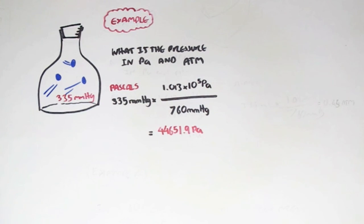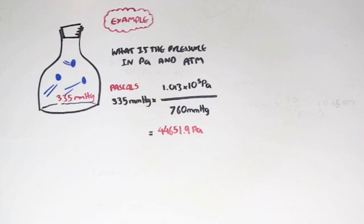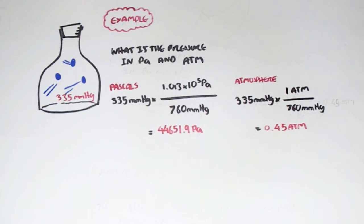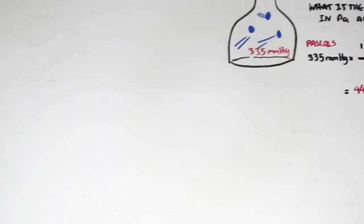Let's check if we're right. We know that about 760 millimeters mercury equals 100,000 Pascals, and we have 335, which is about half of 760. So we expect to have half of 100,000 Pascals, which we did get: 44,651.9 Pascals. Now let's convert 335 millimeters mercury to atmospheric pressure. Since 1 atmospheric pressure equals 760 millimeters mercury, we go 335 times 1 atm divided by 760, which gives us 0.45 atmospheric pressure — about half of 1 atm, which looks correct.